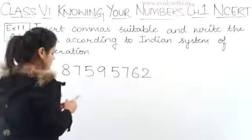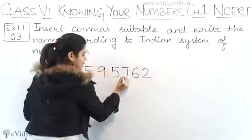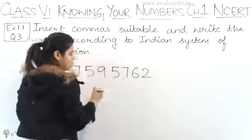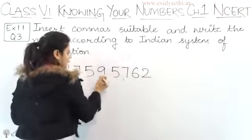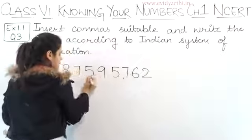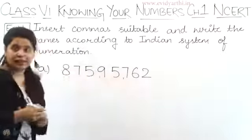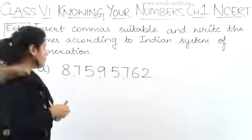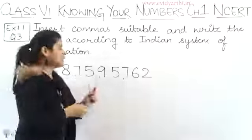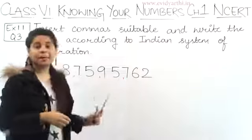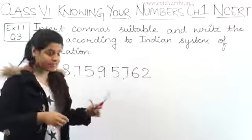In the Indian system, first three digits, then two digits, again two digits. These commas help us a lot to write the number name.